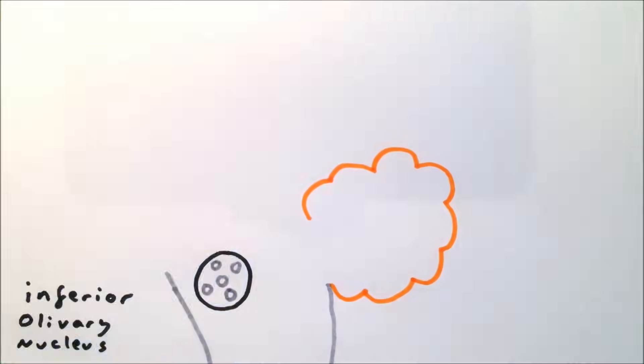It is hypothesized that a particular group of synchronized inferior olivary neurons are able to synchronously activate a corresponding group of Purkinje cells.